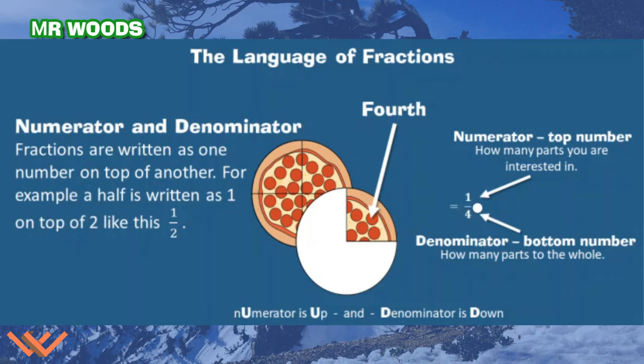This is the number of pieces of the whole, or how many parts to the whole. To help you remember, let's look at this. Numerator is Up. See, I have that U there and up. And denominator is Down. So D is down. The down number is the denominator and the up number is the numerator.